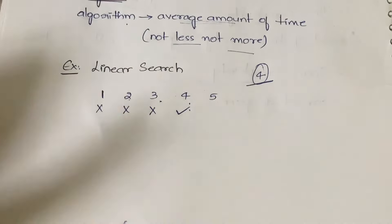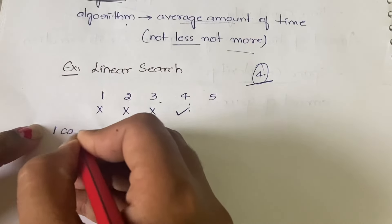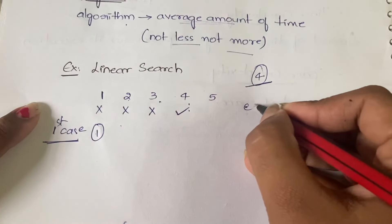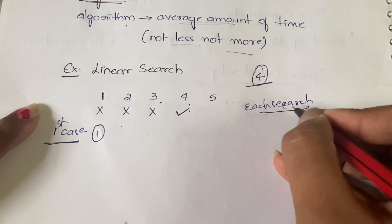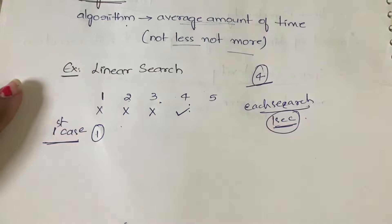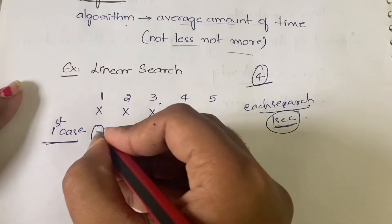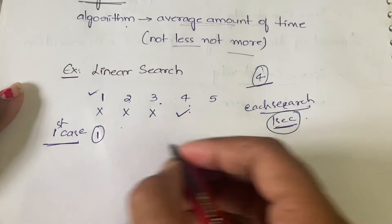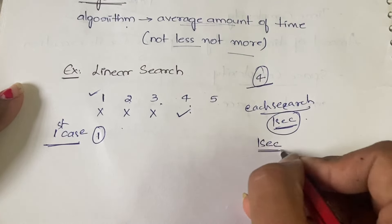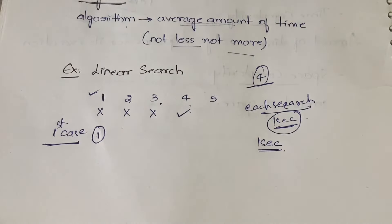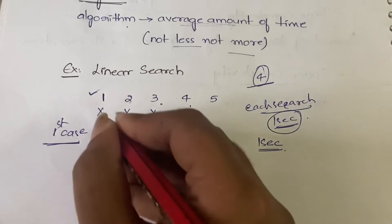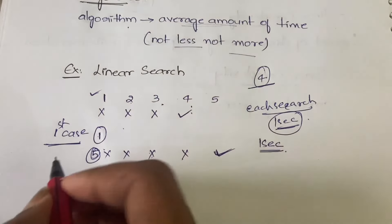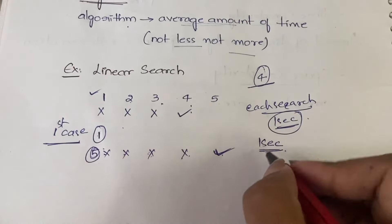Let us relate linear search with time complexity. Suppose each search operation takes 1 second. If you search for element 1, you find it in the first position itself — it takes only 1 second. If you search for element 5, it is not at position 1, 2, 3, or 4, but it is at position 5, so it takes 5 seconds total.